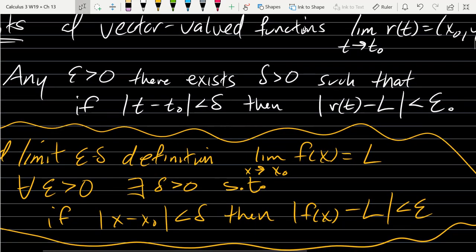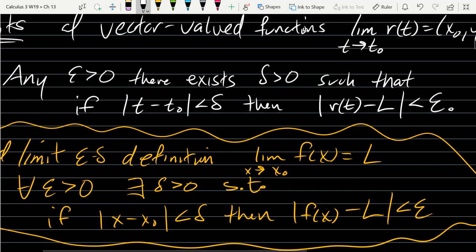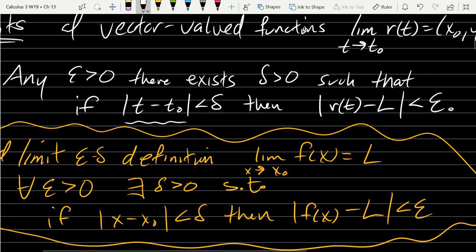Let's look at our definition. What's really changing? The x changes to t. Are those numbers? Is t minus t-naught? Are those numbers? Those are just numbers. We're subtracting, taking absolute value just like before. So that's exactly the same on the inputs.